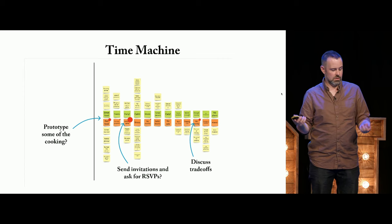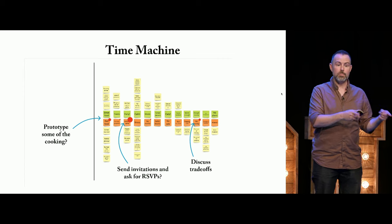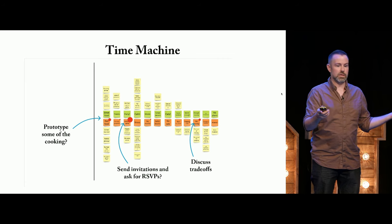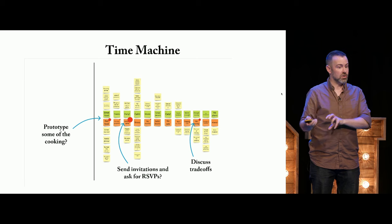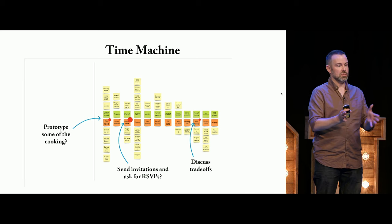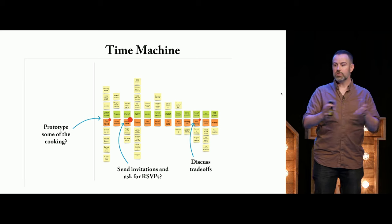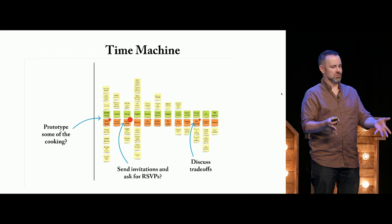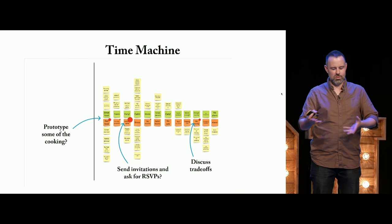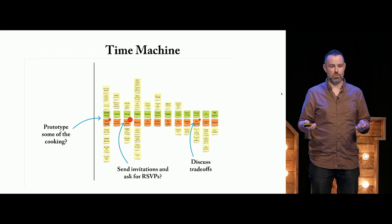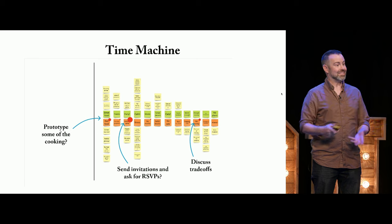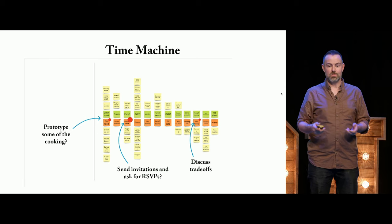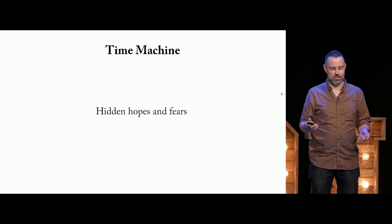We can then tackle concerns in the sequence that's highest priority — biggest fear first. For instance, send invitations and ask people to RSVP early. Prototype by making some cooking this weekend and see if it's good. Discuss trade-offs: do we put resources into great food, decorations, or presents? Very similar to what I see on product teams all the time — and very similar to what I see NOT getting discussed on product teams, because we just assume everyone wants the same things.